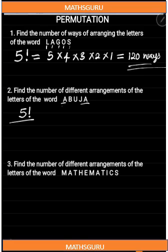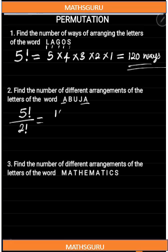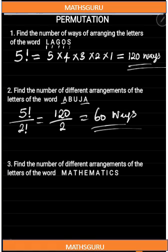Then, since we are aware that we have a repeated letter here — A — we take note of the number of ways we can arrange this repeated letter based on the number of times it appears. We have one and two, so we can arrange that in two ways, which is two factorial. Five factorial is 120 and two factorial is two. When we divide, we get 60 ways of arranging the letters of the word Abujaan.